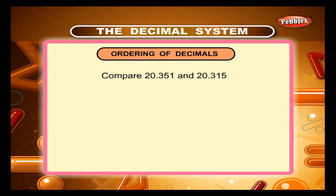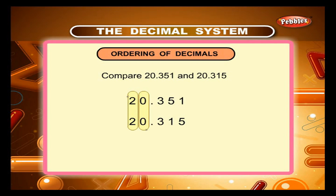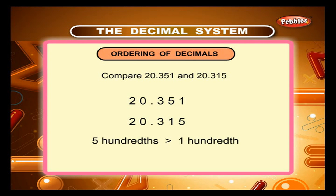Sum 2. Compare 20.351 and 20.315. The whole number portions are the same. The tenth digits are the same. The hundredth digit in 20.351 — five hundredths — is greater than the hundredth digit in 20.315 — one hundredth. Therefore, 20.351 is greater than 20.315.